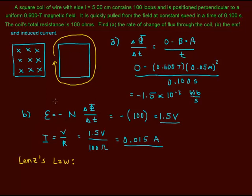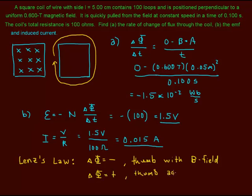So that's how you use Lenz's Law. And I'm going to very briefly abbreviate it and say that when the change in flux is negative, then, in other words, you're losing flux, thumb with B-field. Okay, so we're going to put our thumb in the direction of the existing B-field. When the change in flux is positive, in other words, I'm increasing the flux, thumb to be against B-field.